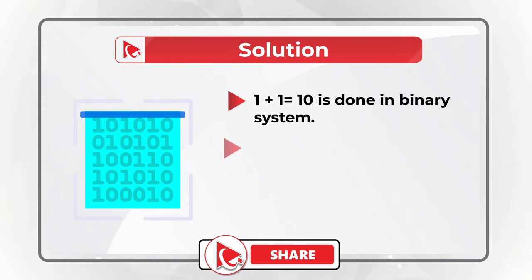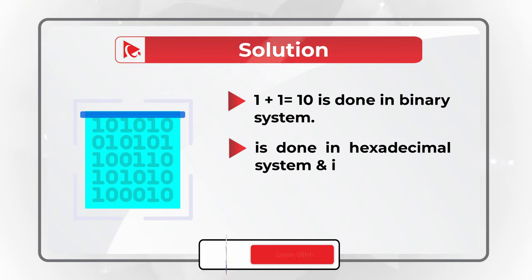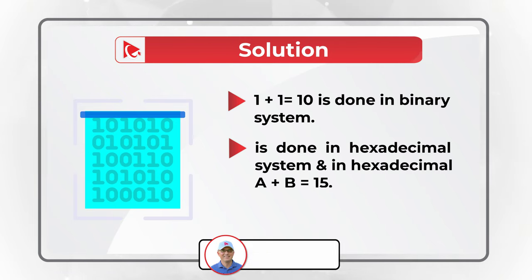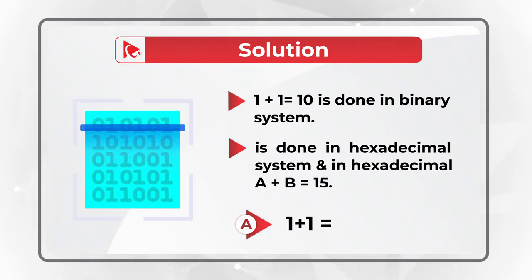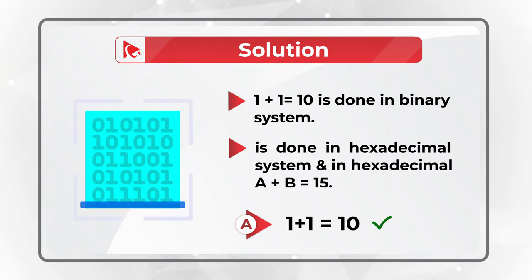The second expression is done in a hexadecimal system, and in hexadecimal system a plus b equals 15, not 17. So the correct answer here is choice A: 1 plus 1 equals 10.